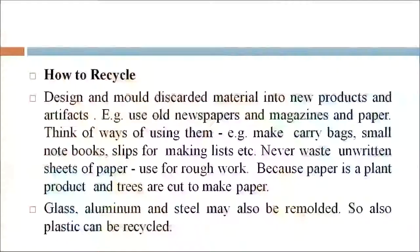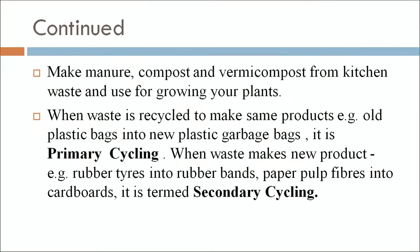How to recycle: design and mold discarded material into new products and artifacts. Use old newspapers, magazines and paper — make carry bags, small notebooks, slips and discs. Never waste unwritten sheets of paper. Glass, aluminum and steel may also be remolded, and plastic can be recycled. Make manure, compost and vermicompost from kitchen waste. When waste is recycled into similar products, for example old plastic bags into new plastic garbage bags, it is primary cycling. When waste makes a new product, for example rubber tires into rubber bands or paper pulp fibers into cardboard, it is secondary cycling.